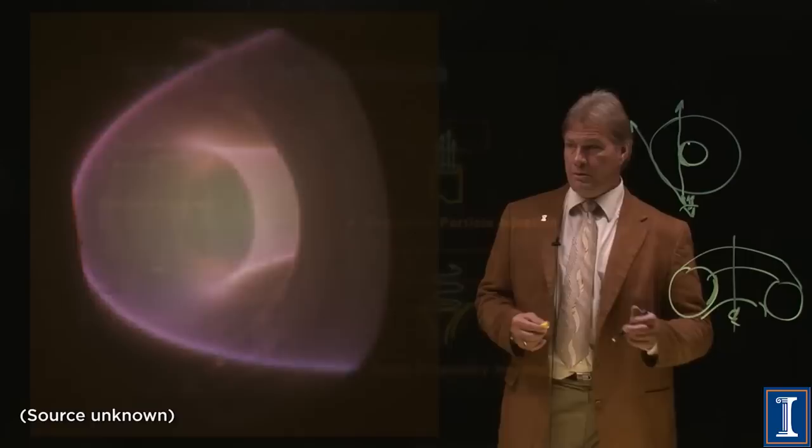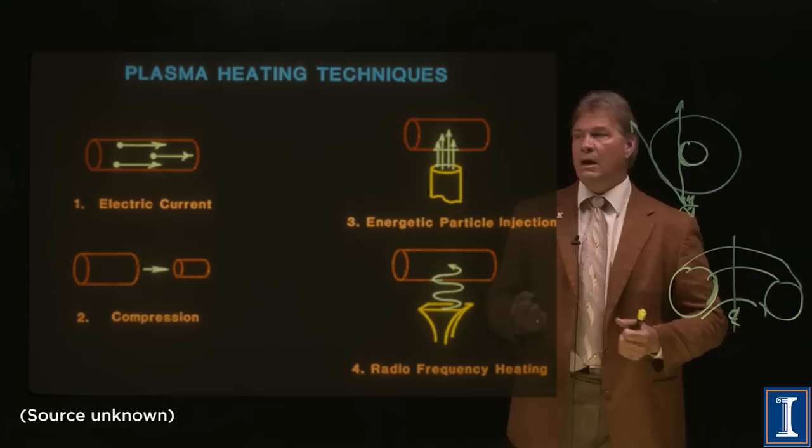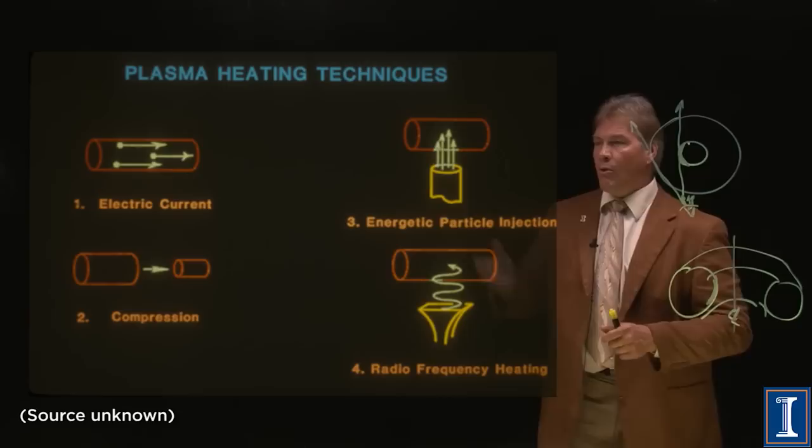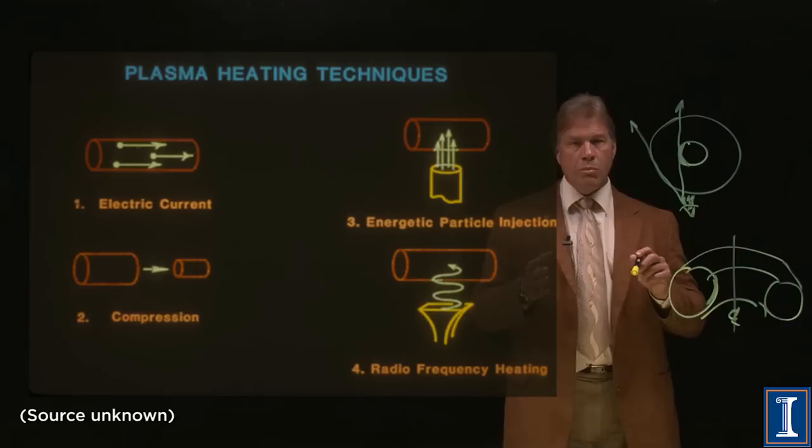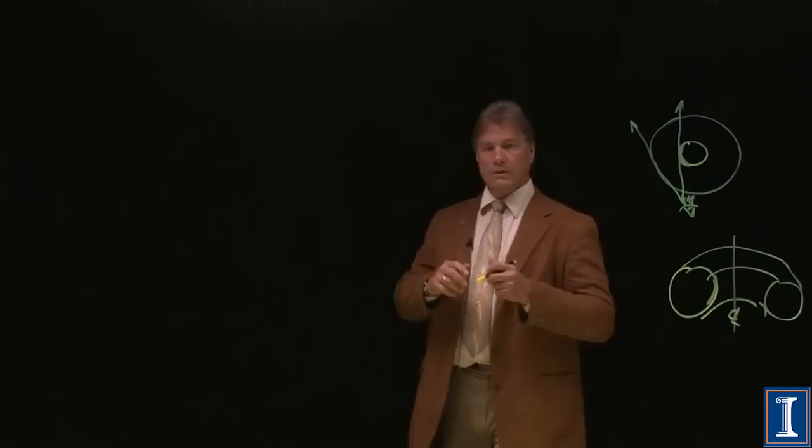And the very last thing you need to do is you need to heat it up. And you've got a variety of tools. You could just pass a current through it like a toaster. You could compress it by upping the magnetic fields. You could use radio frequency or other electromagnetic waves to try to actually make resonances with the plasma that's going around and heat it that way. Or you could actually throw in neutral atoms that are moving at a very high velocity. And once they get into the plasma, they become ionized and are trapped by the magnetic field.